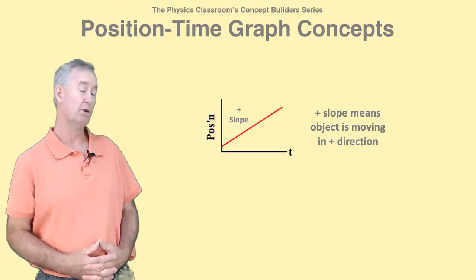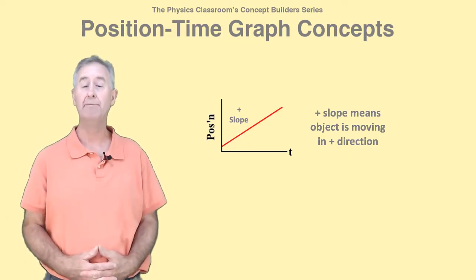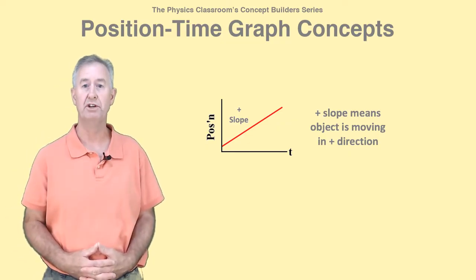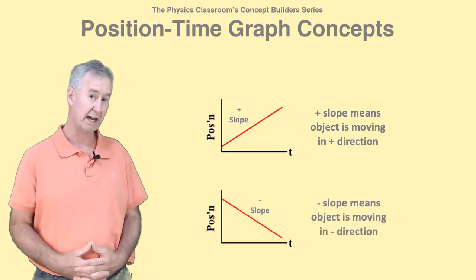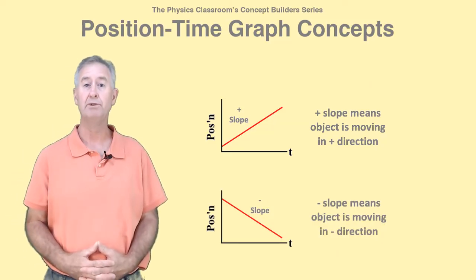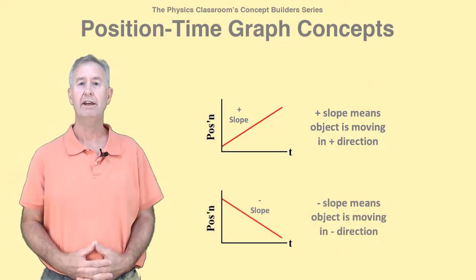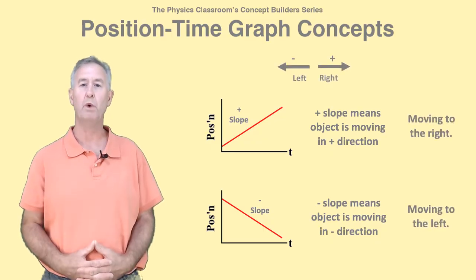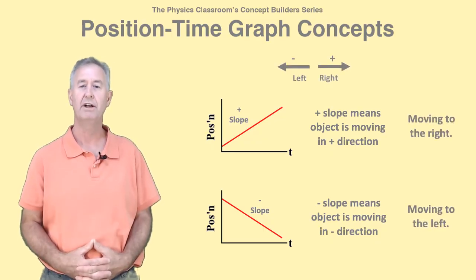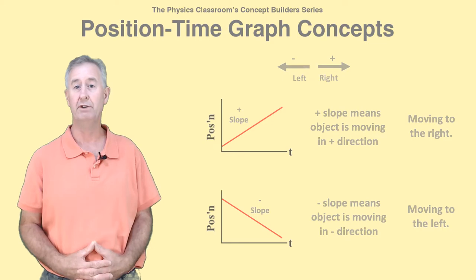The slope could be positive, or upward slope, indicating that the object is moving in the positive direction. A negative slope, or downward slope, indicates that the object's moving in the negative direction. In physics, we often designate rightward as the positive direction. This makes leftward the negative direction.